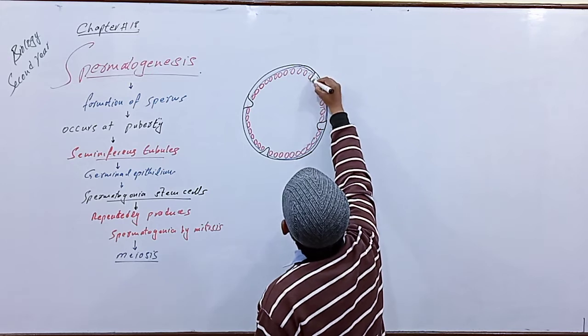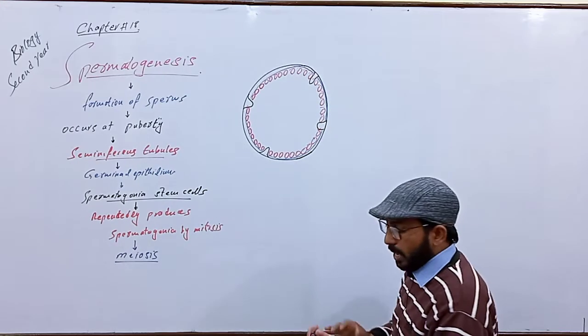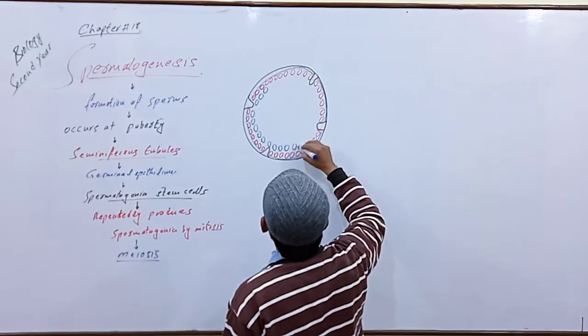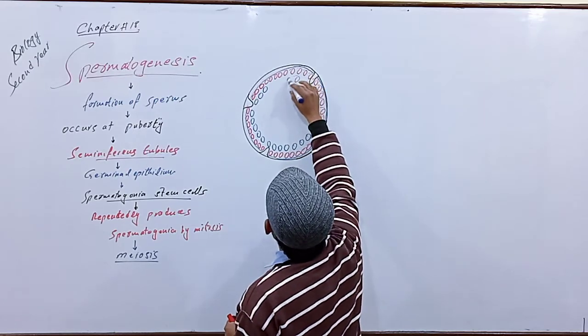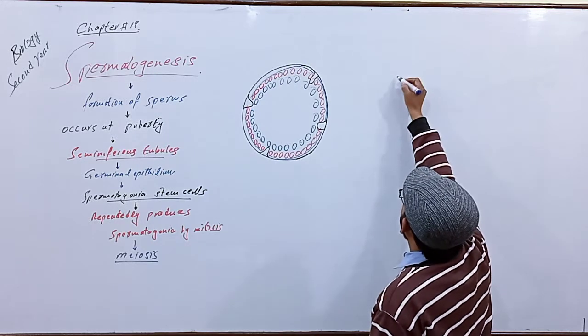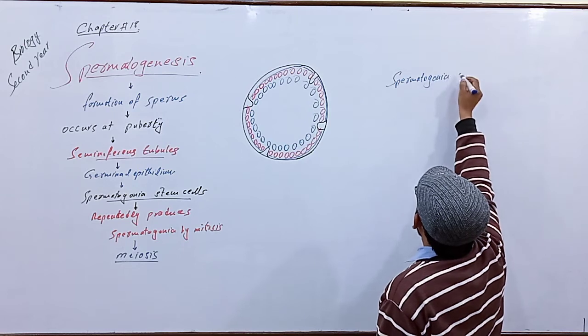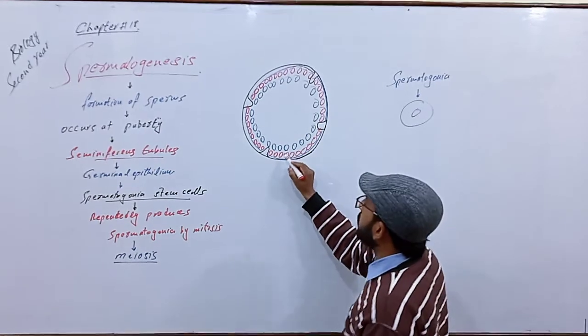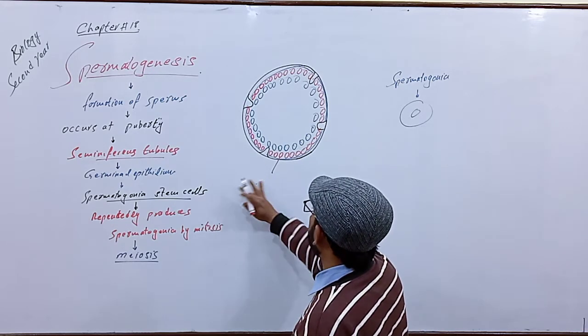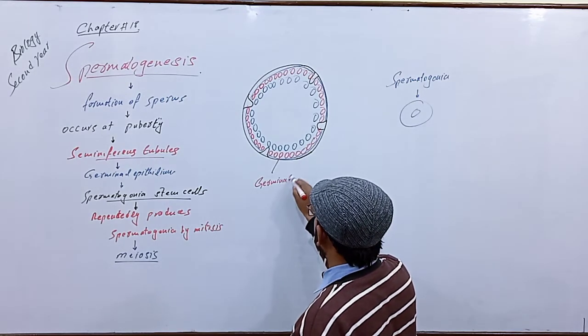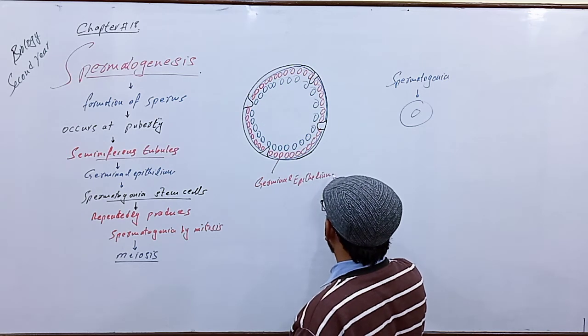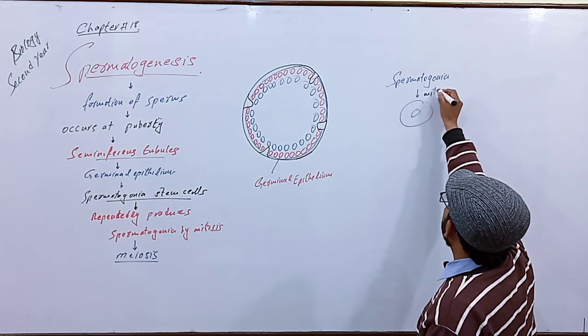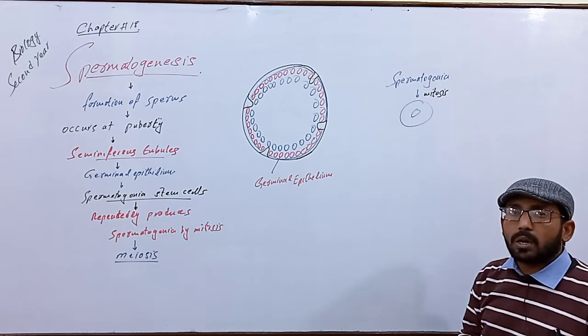Sertoli cells produce a liquid medium for the nourishment of sperm. The first layer is the spermatogonia layer. The germinal epithelium inside the basement membrane is renewed by the process of mitosis. The spermatogonia reproduces by mitosis.